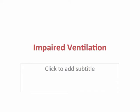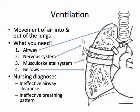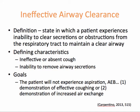We will begin with impaired ventilation. Ventilation is the movement of air into and out of the lungs. For this to work properly, you need an intact airway, nervous system, musculoskeletal system, and bellows — referring to the lungs. Nursing diagnoses that fall into this category include ineffective airway clearance and ineffective breathing pattern. Ineffective airway clearance is a state in which a patient experiences an inability to clear secretions or obstructions from the respiratory tract to maintain a clear airway. Defining characteristics include ineffective or absent cough reflex and an inability to remove airway secretions.